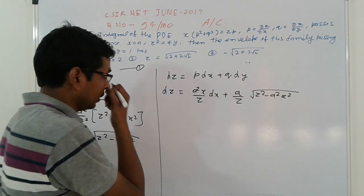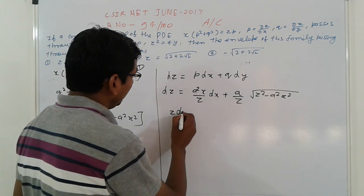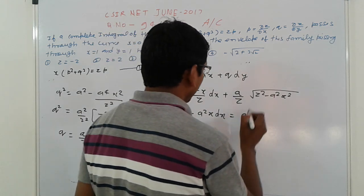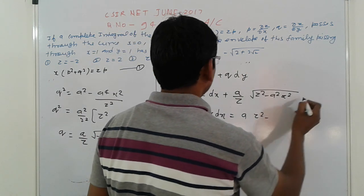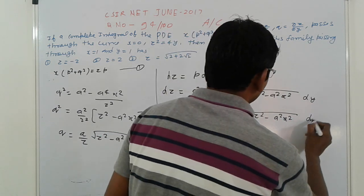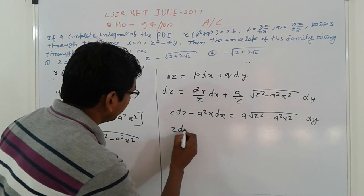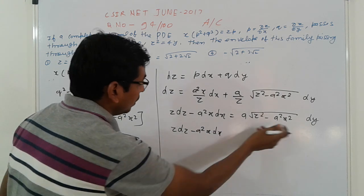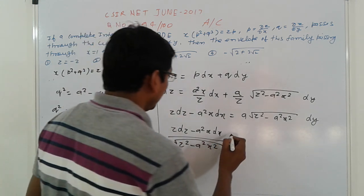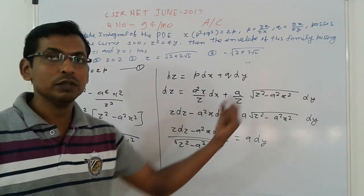Rearranging: z·dz − a²x·dx = a√(z² − a²x²)·dy. This is the variable separable method applied here.